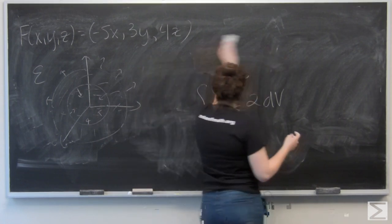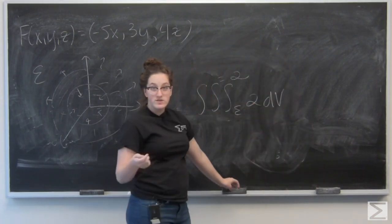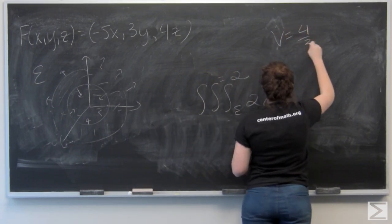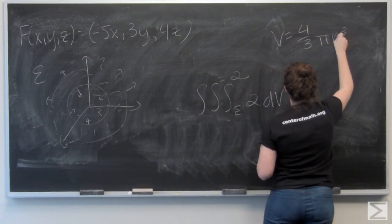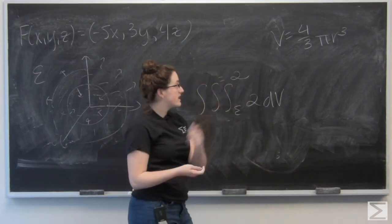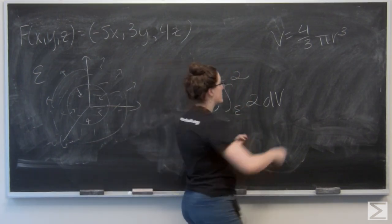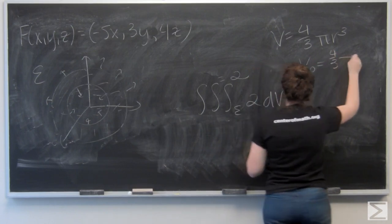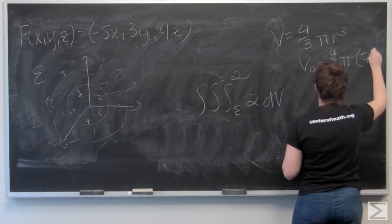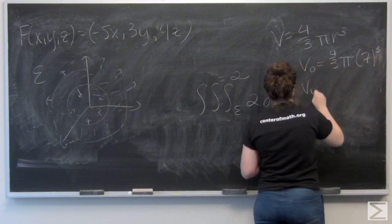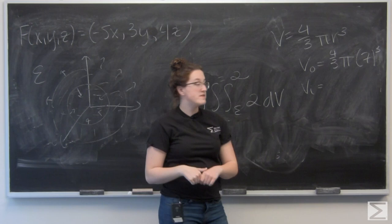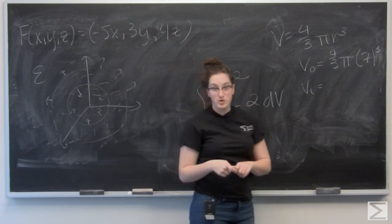So let's recall that the volume of a sphere is given by 4 thirds pi r cubed. So for the volume of the outer sphere, I get 4 thirds pi times 7 to the third. And to find the volume of E I want to subtract the volume of that inner sphere, which is 4 thirds pi times 2 cubed.